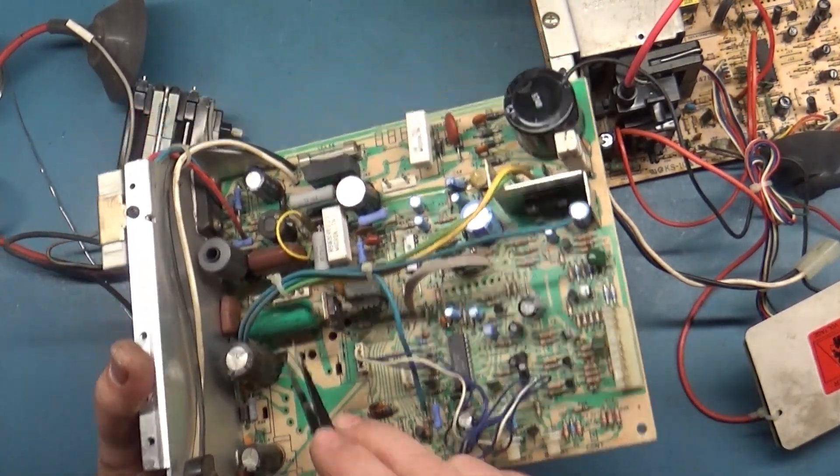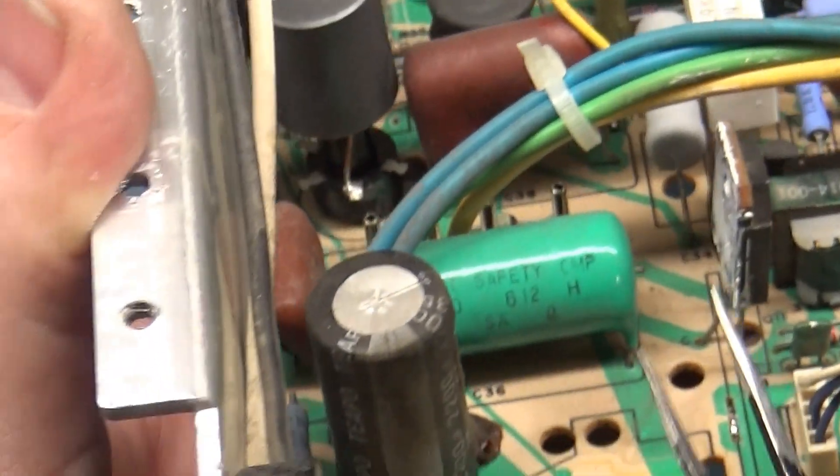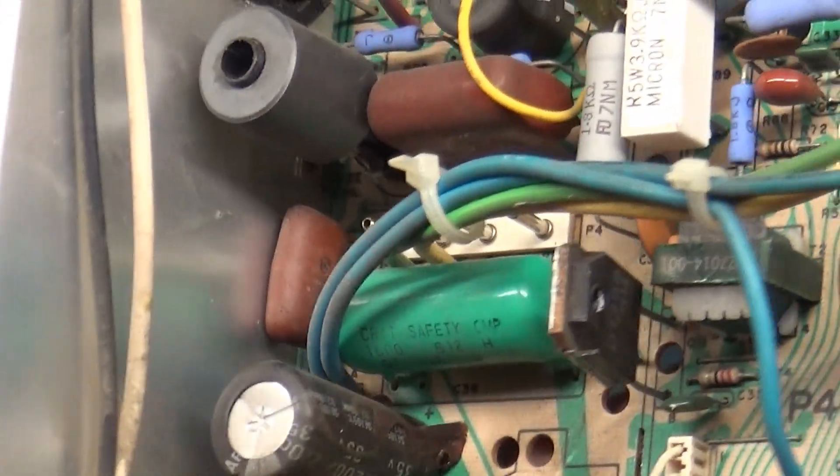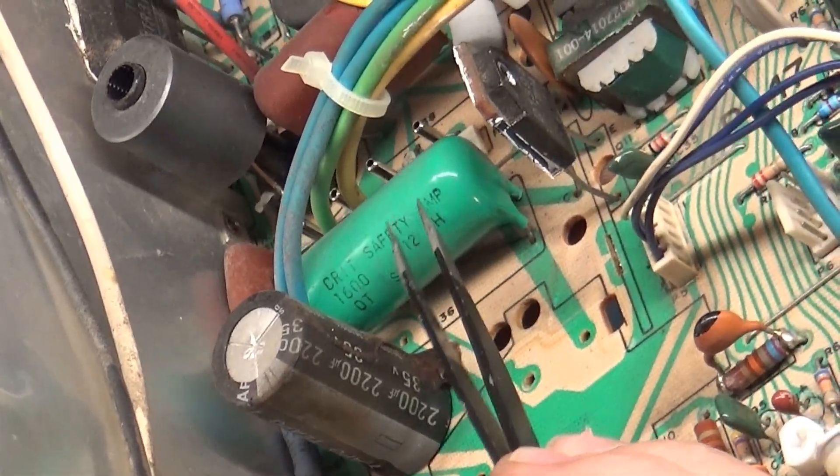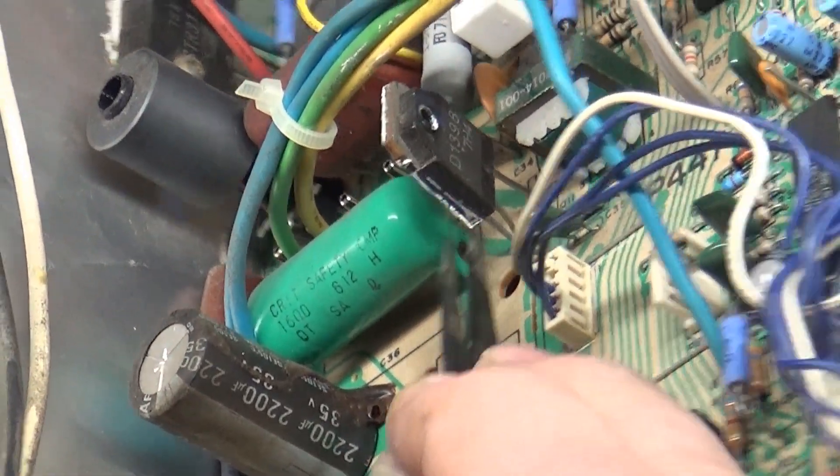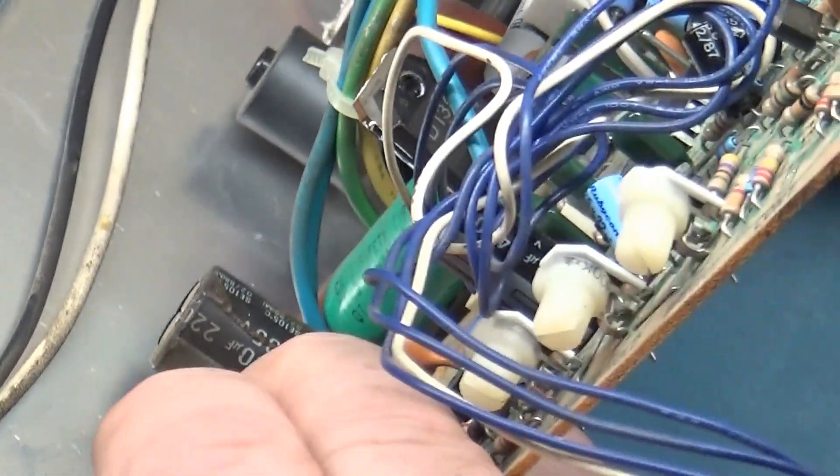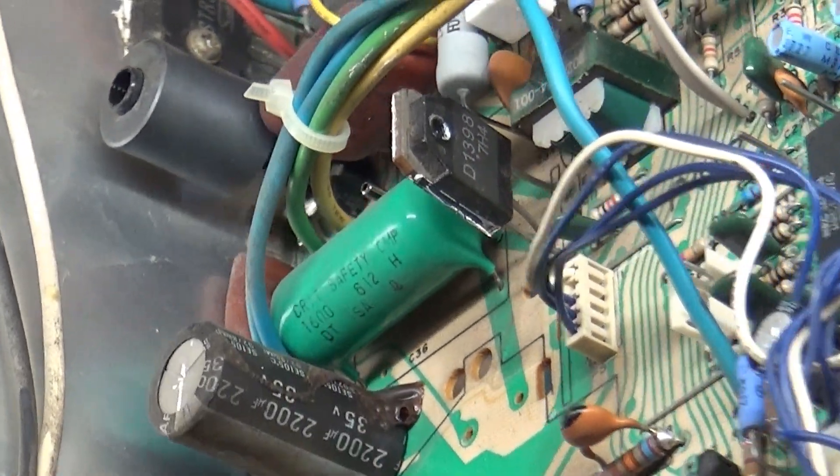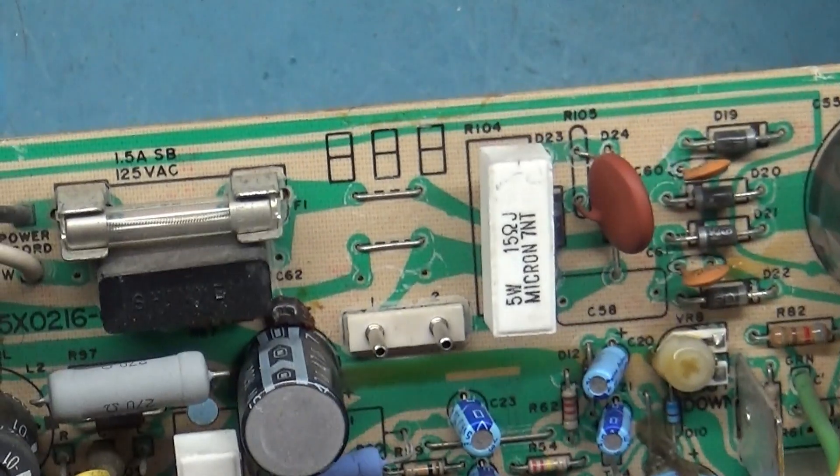But the critical safety cap is this guy right here, C36. And you can even see on here, it says critical safety cap. Now there's three different versions of the way this is set up in the circuit. There's the single cap here that has four legs. You can see it's a single cap with one, two, and then if you look in there, there's three, four. So it's one single cap with four legs.